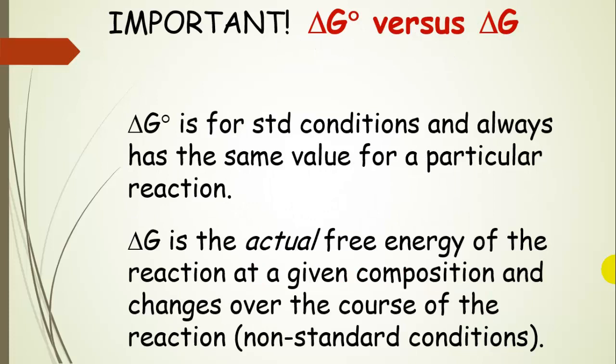Delta G naught is for standard conditions only and always has the same value for a particular reaction. Delta G is the actual free energy at a given composition, so it changes over the course of the reaction, and you have to add that corrective term to account for the different ratio of products and reactants.